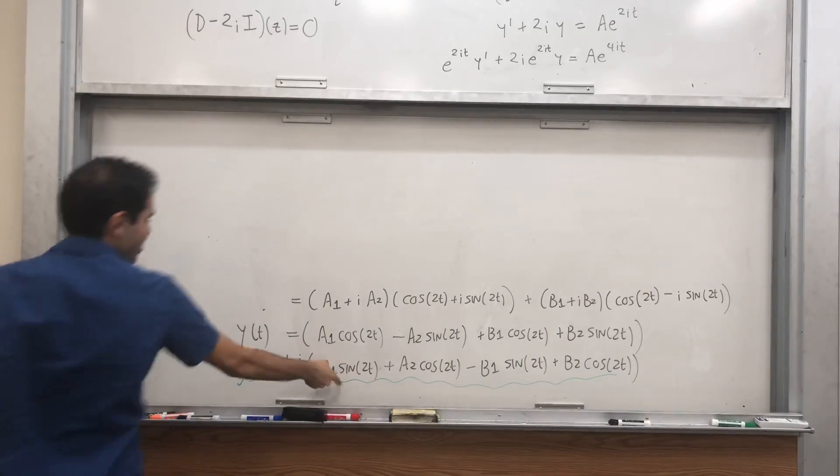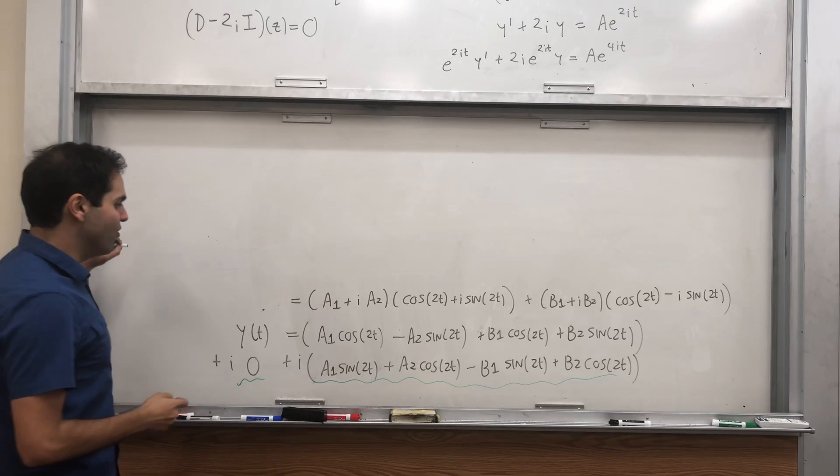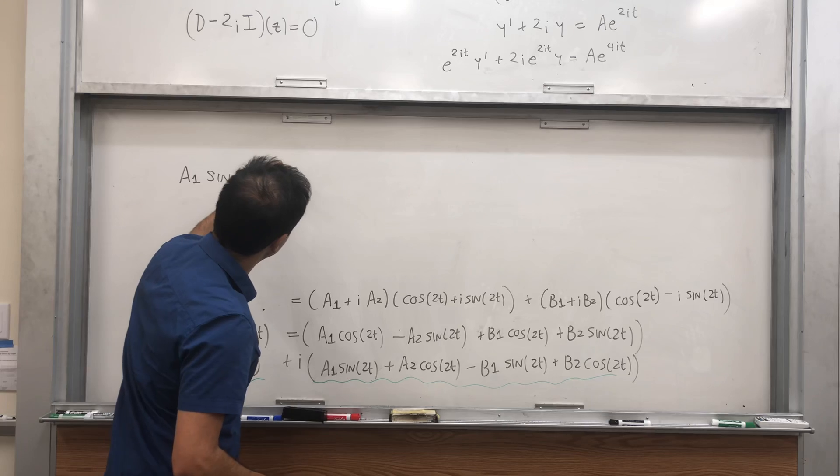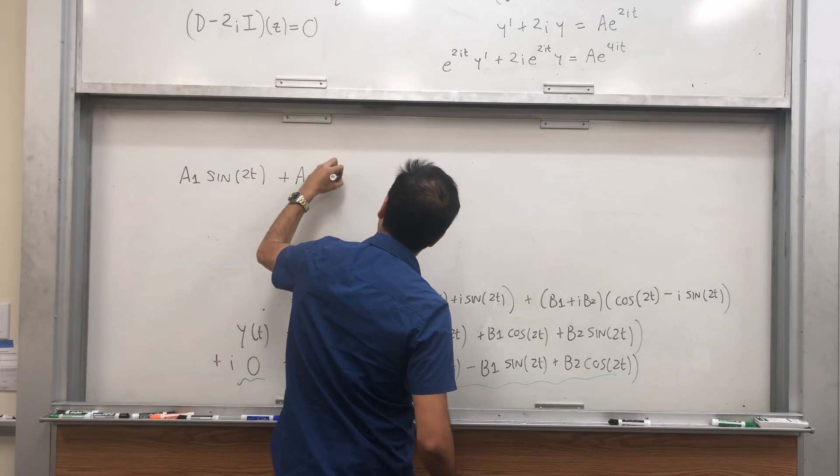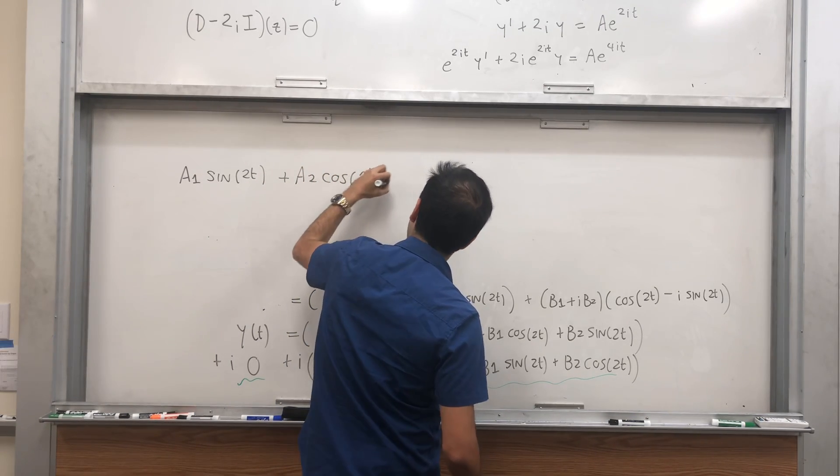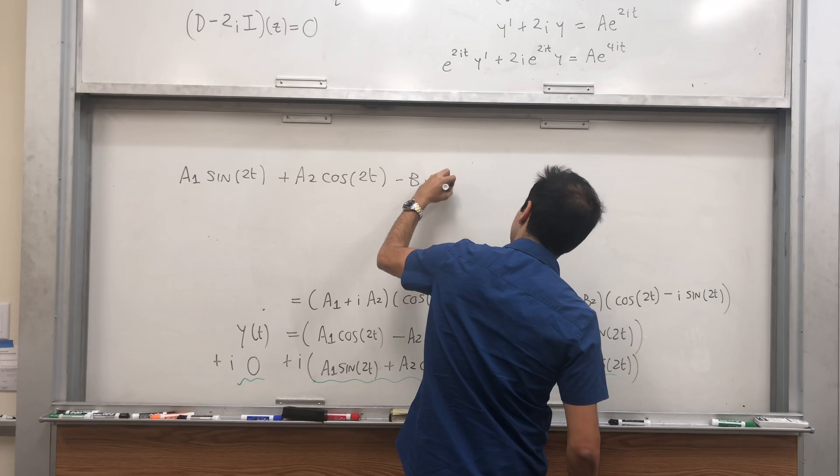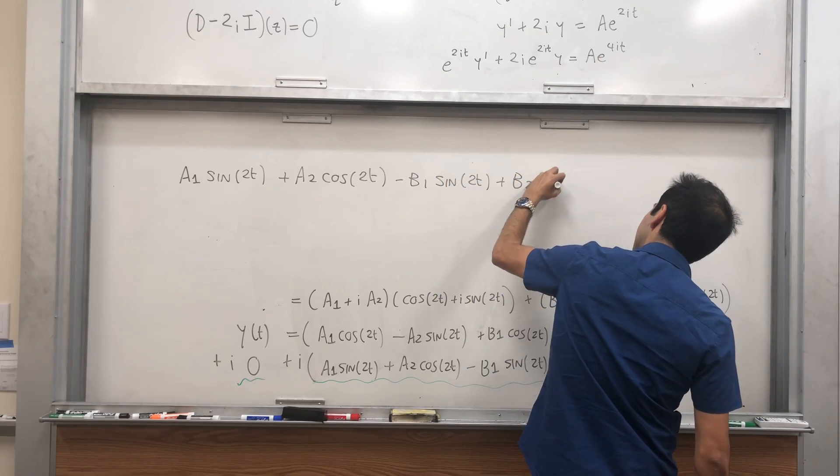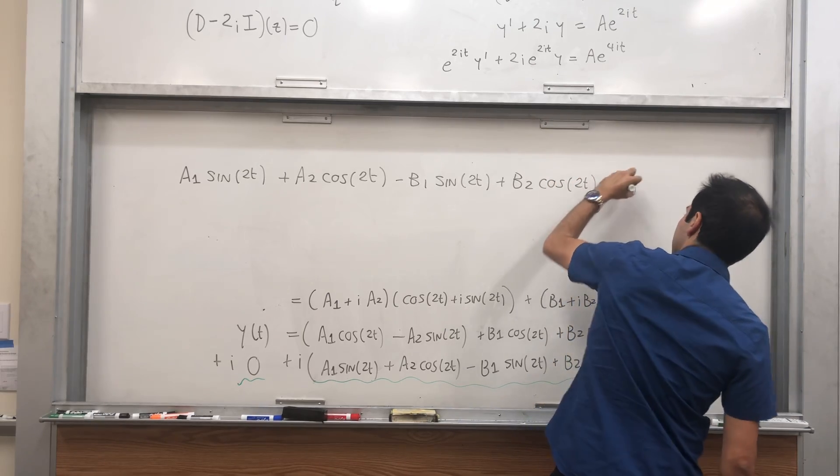This expression here is just 0, and we get a1 sine of 2t plus a2 cosine of 2t minus b1 sine of 2t plus b2 cosine of 2t equals 0.